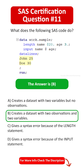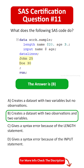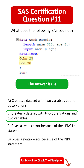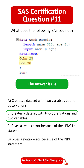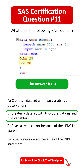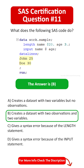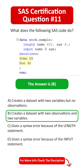The answer is B: Creates a dataset with two observations and two variables. Explanation: The given SAS code defines a dataset work.sample with two variables, name and age, and two observations.